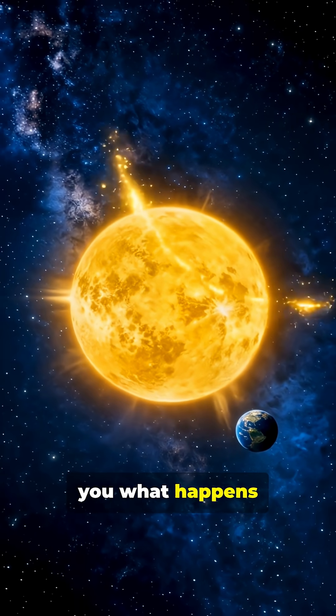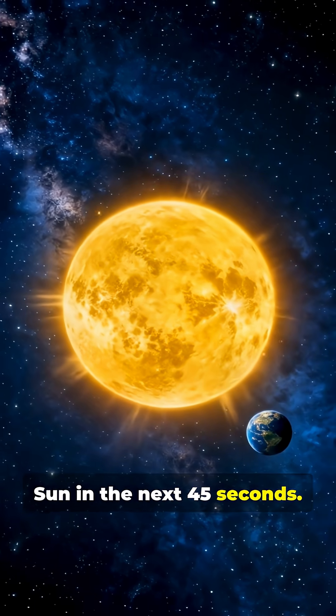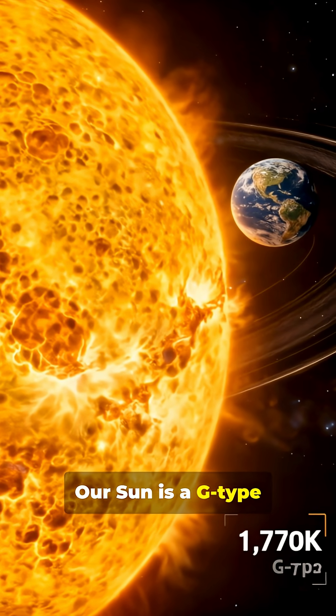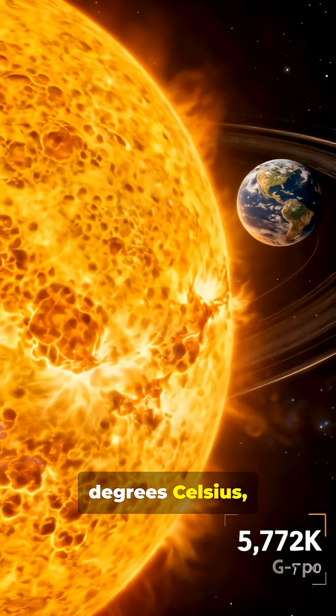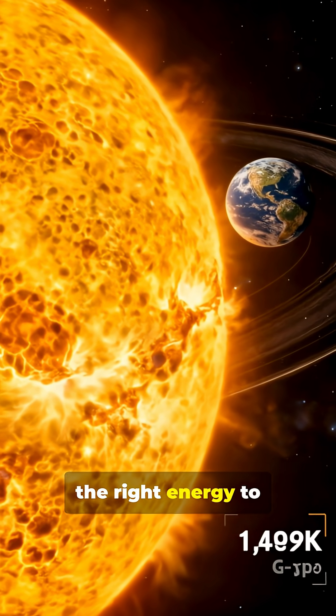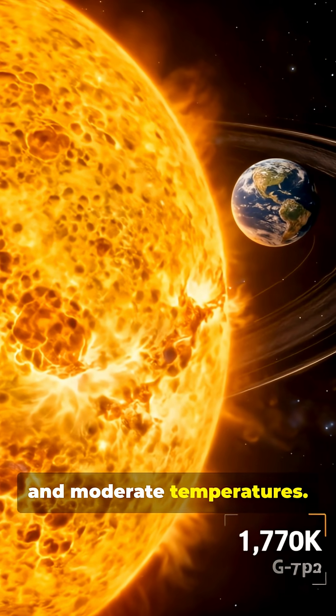I'm going to show you what happens when we swap out our Sun in the next 45 seconds. Our Sun is a G-type star at 5,500 degrees Celsius, providing exactly the right energy to keep Earth habitable with liquid water and moderate temperatures.